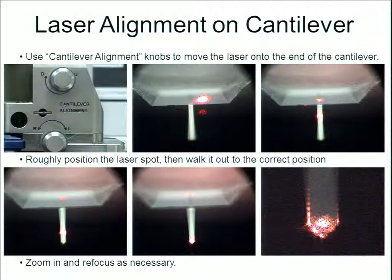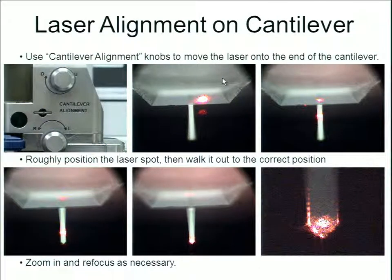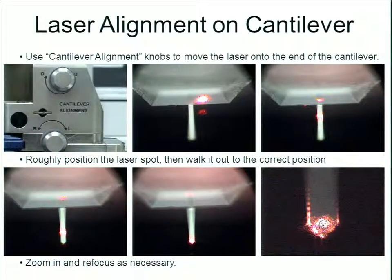Laser alignment is done manually using mirrors. You have two knobs that help you rotate the mirror. You need to find the laser, move it to the end of the chip, and then walk the laser out to the end of the cantilever until it's in the correct location — basically centered between the three angles.